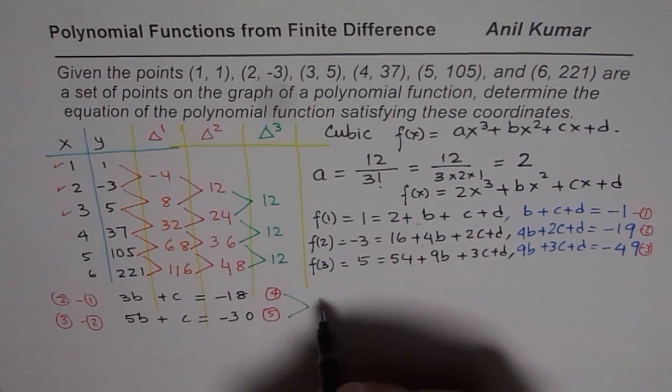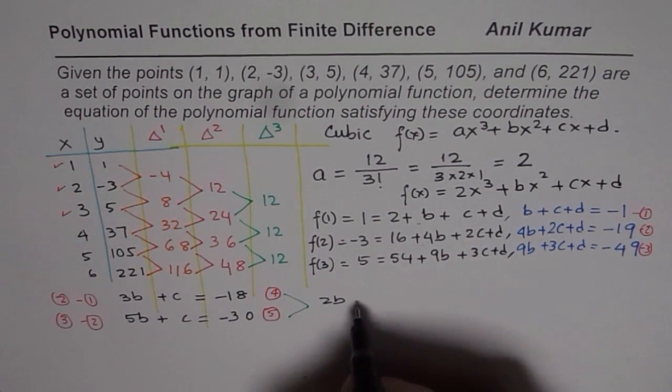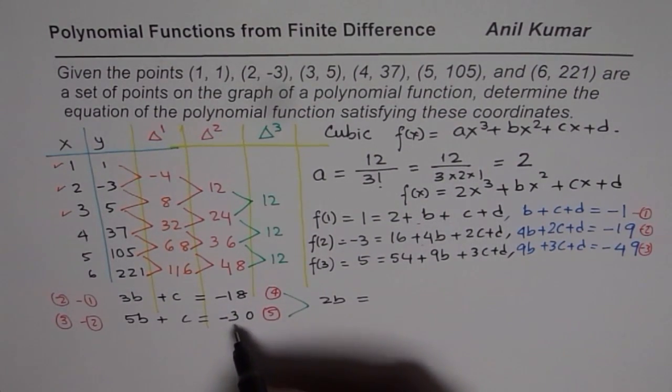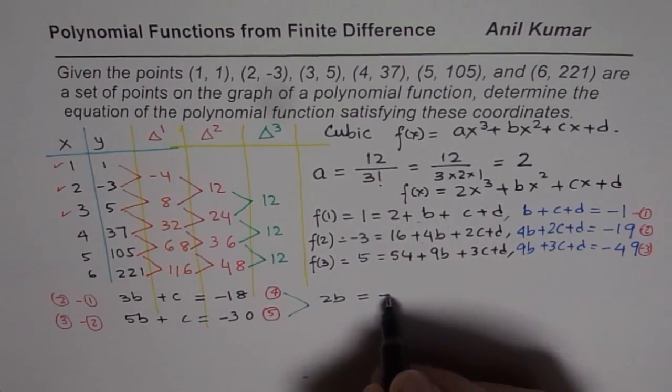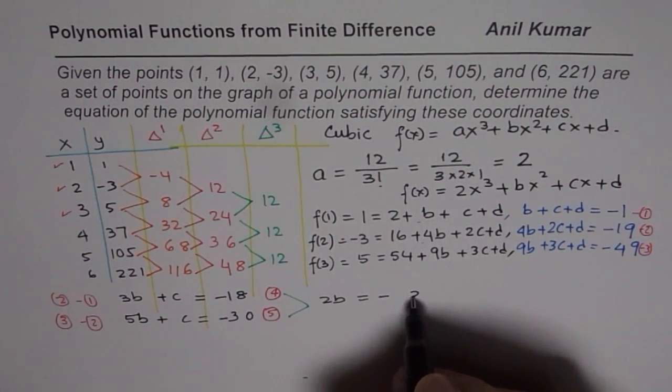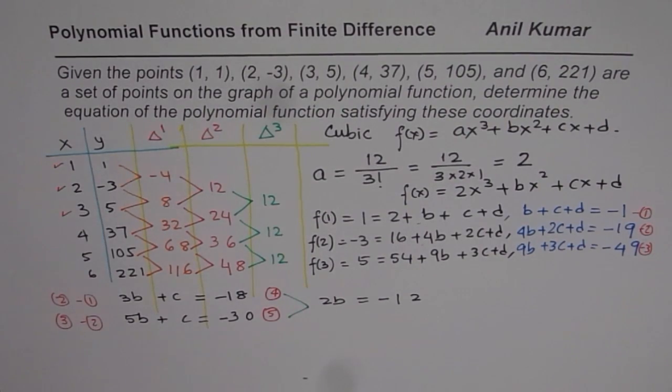5b minus 3b is 2b. c minus c is 0. And -30 minus -18 will give us, when you take away, -12.